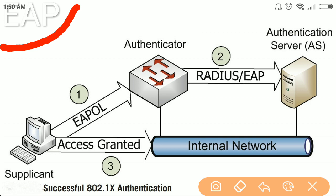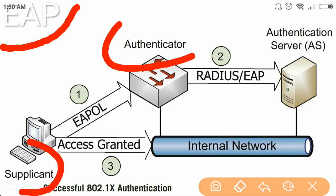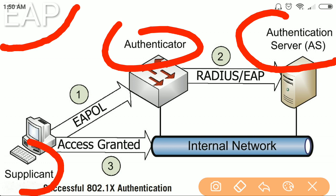The next protocol is the Extensible Authentication Protocol, or EAP. EAP is not strictly a protocol but is basically a framework, and it has around 40 variations. There are three components in EAP: the supplicant, the authenticator, and the authentication server.